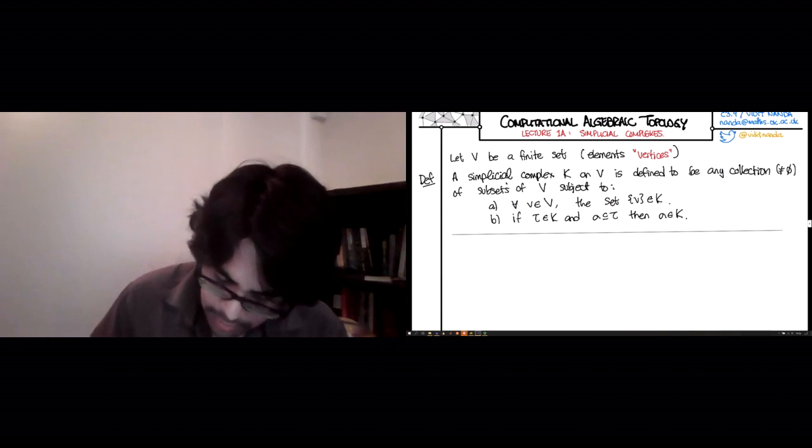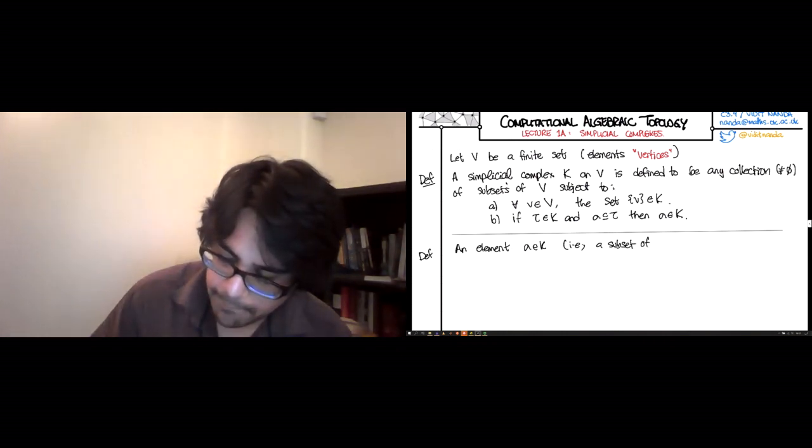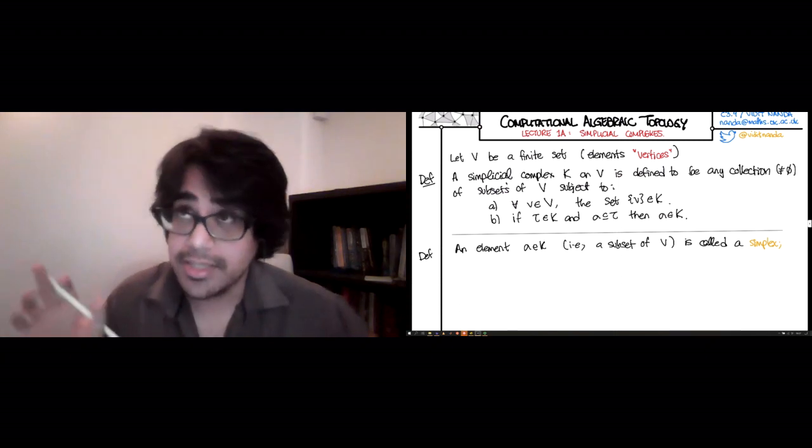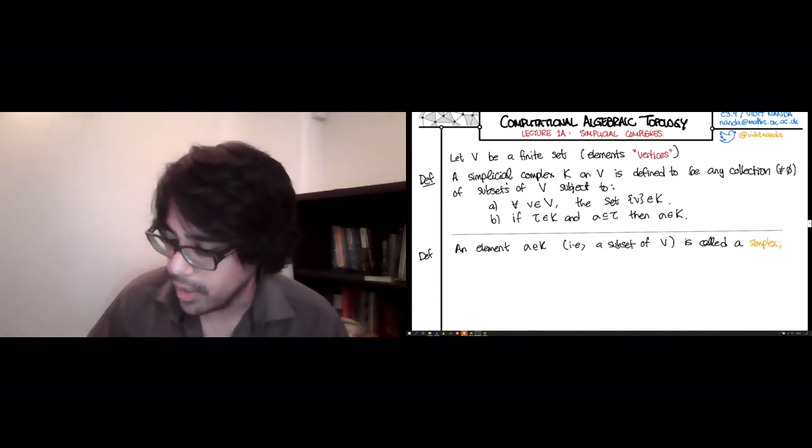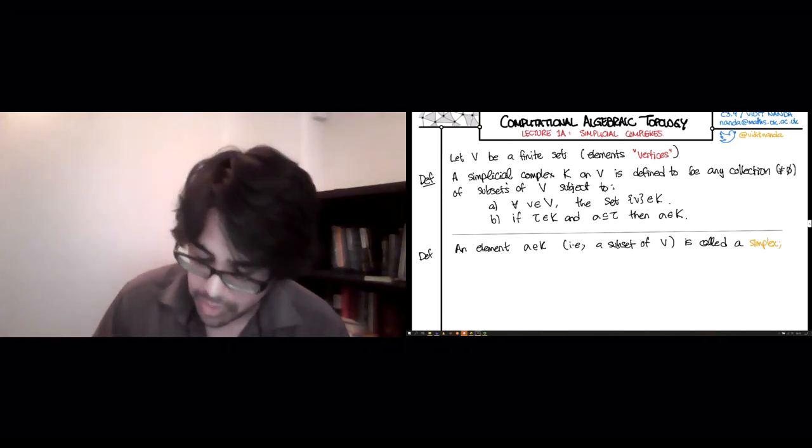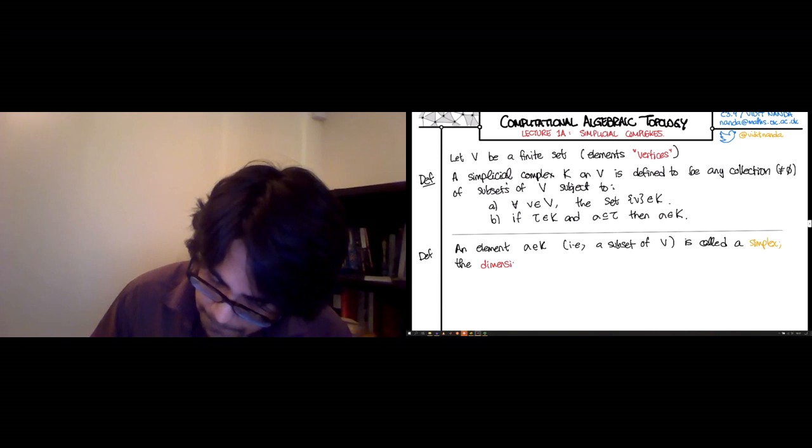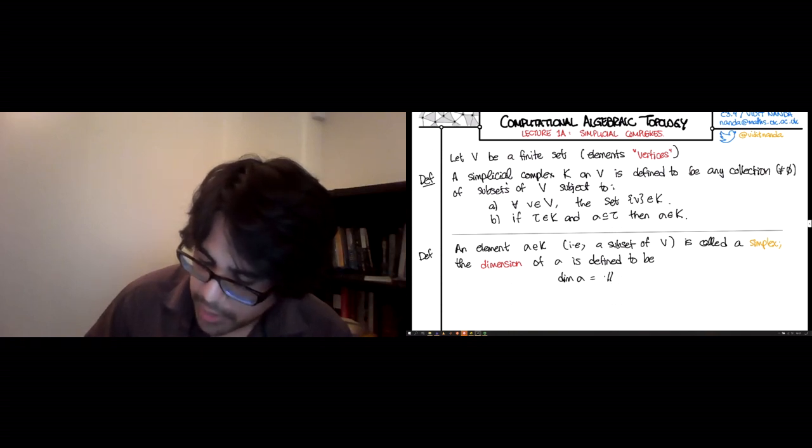Let's define a few more things. An element sigma in K, which must be a subset of V, is called a simplex. The dimension of sigma is defined to be the cardinality of sigma minus one.